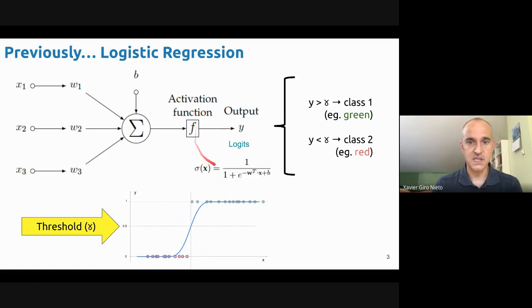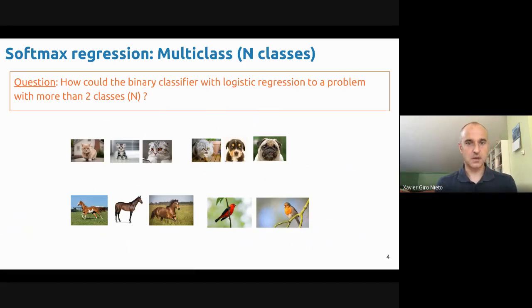The output, if this is a sigmoid, will go between 0 and 1. By setting a decision threshold we can decide between class 0 or class 2. But in general we'll be interested in dealing with more than two classes. We don't want to just distinguish between cats and dogs, but maybe also horses or birds.